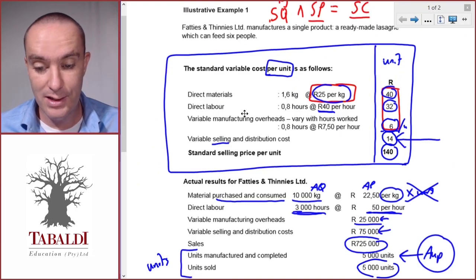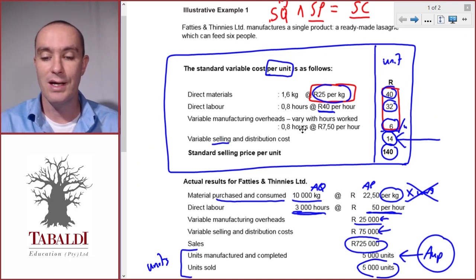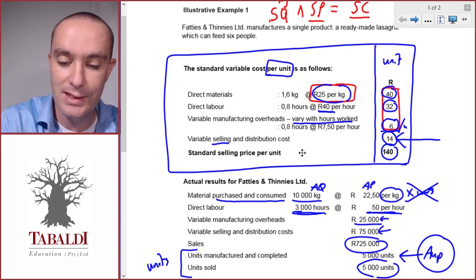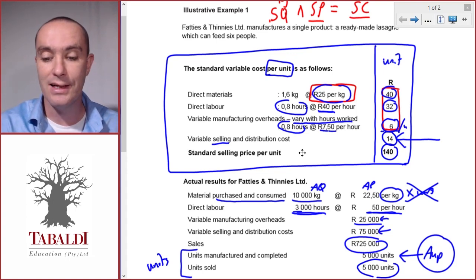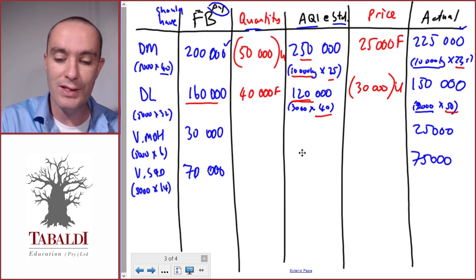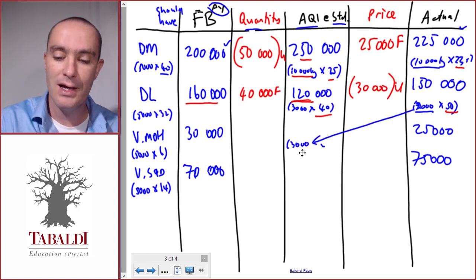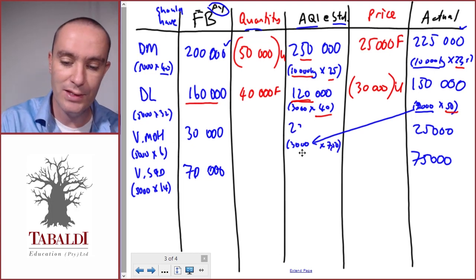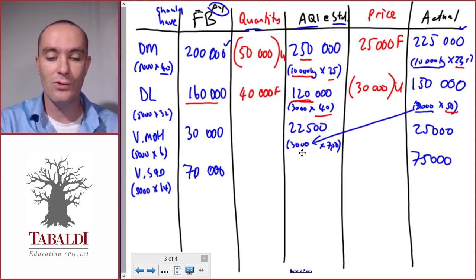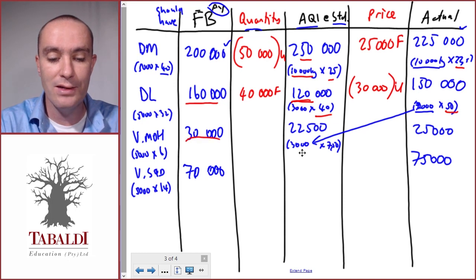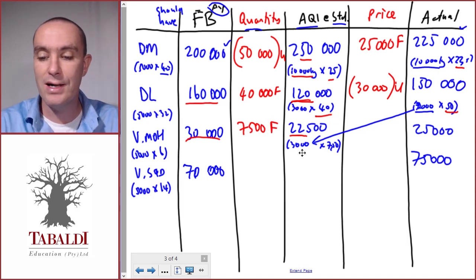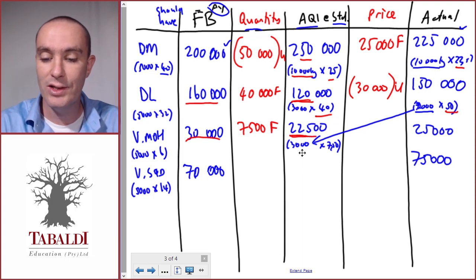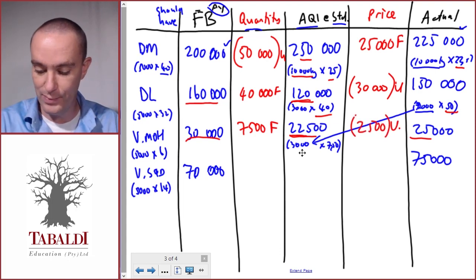Variable manufacturing overheads vary with hours worked using the same labor hours per unit as direct labor. The standard rate is 7.50, so 3,000 actual hours times 7.50 equals 22,500 for the middle column. The efficiency variance: we should have spent 30,000 but the middle column is 22,500 — a favorable variance of 7,500. The rate variance: the middle column is 22,500 but actual was 25,000 — an unfavorable variance of 2,500.